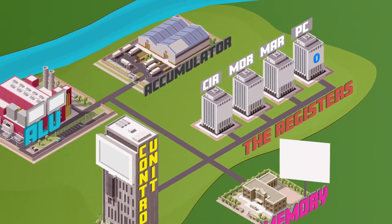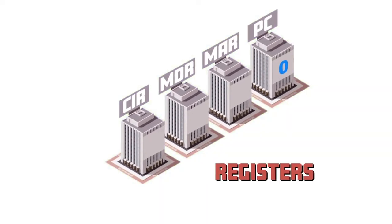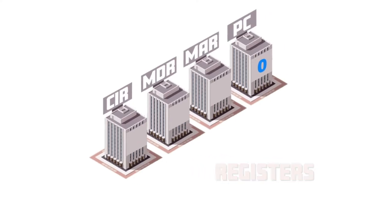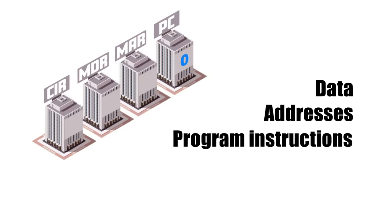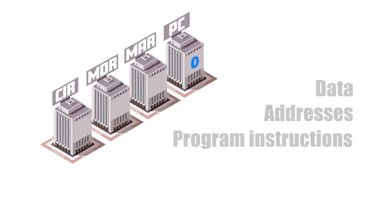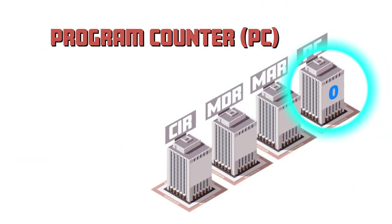Everything begins when a program has to run. These buildings are called registers. They're like government administration offices. All information flowing through the city passes through one of these buildings — data, addresses, program instructions, all registered here.